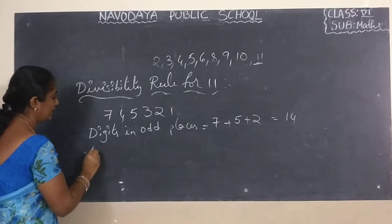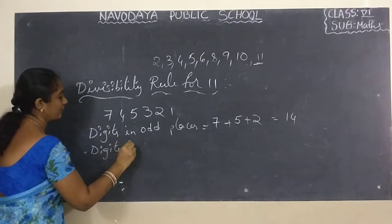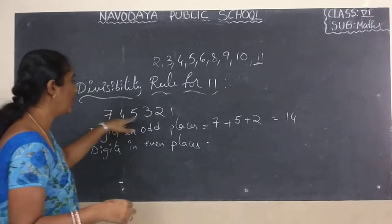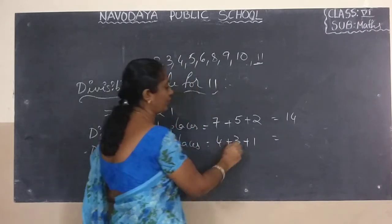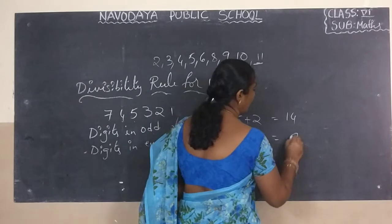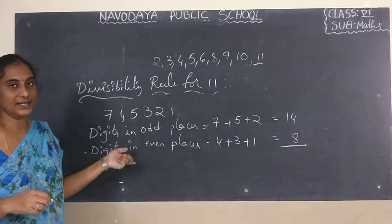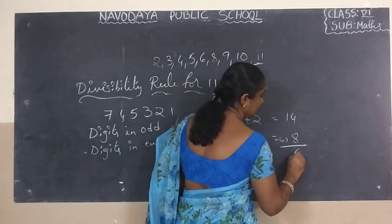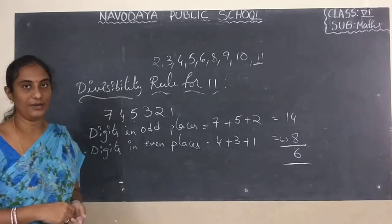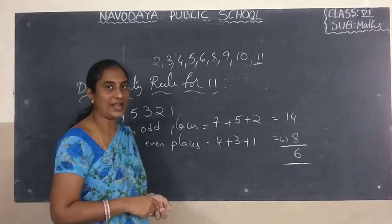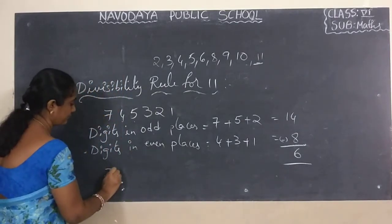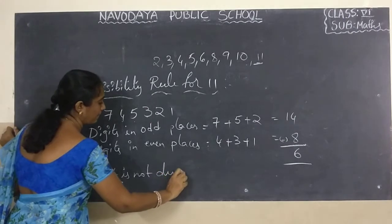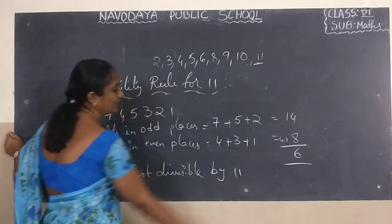Digits in odd places: 7 plus 5 plus 2 equals 14. Digits in even places: 4 plus 3 plus 1 equals 8. Now find the difference: 14 minus 8 equals 6. Is 6 a multiple of 11? No. In the 11 times table we are not getting 6. So this number is not divisible by 11.